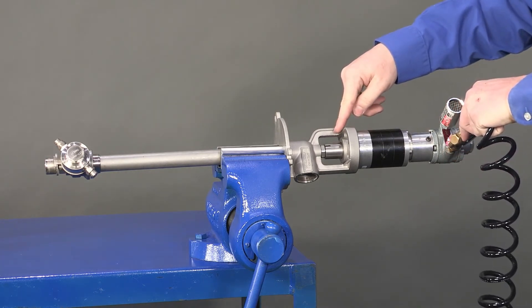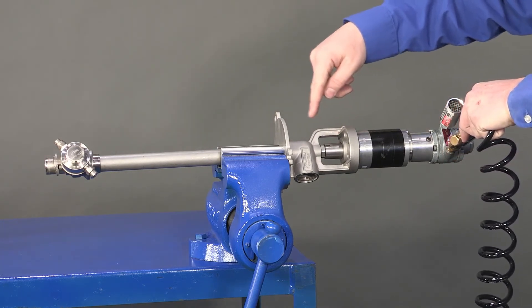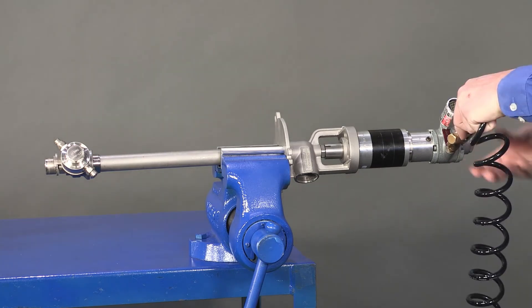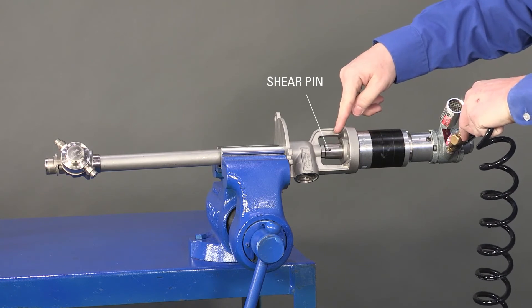If the coupler is rotating but the shaft and nozzle hub are not, this would indicate that the shear pin on the drive shaft may be broken and will need to be replaced.